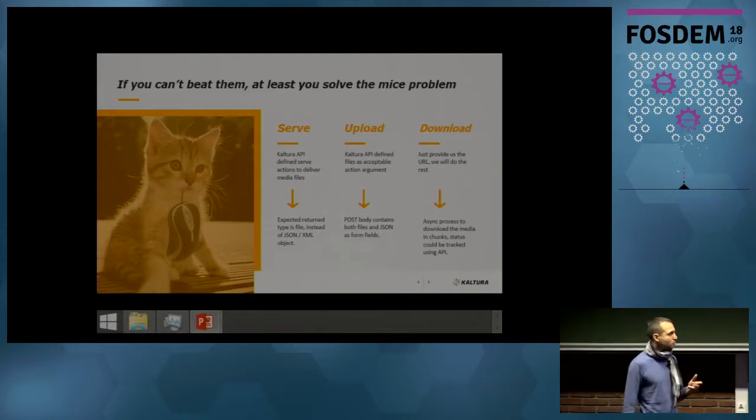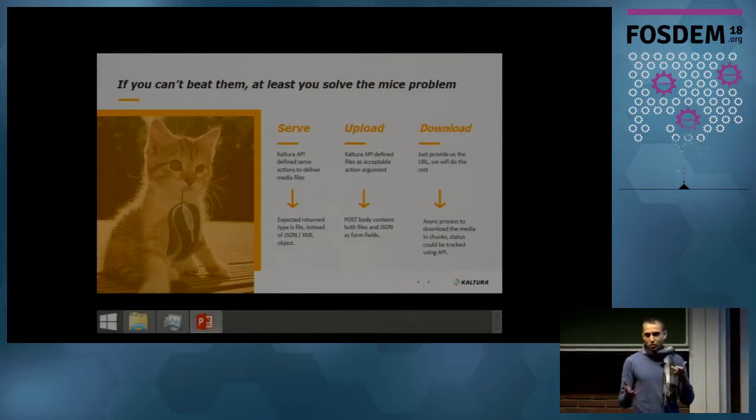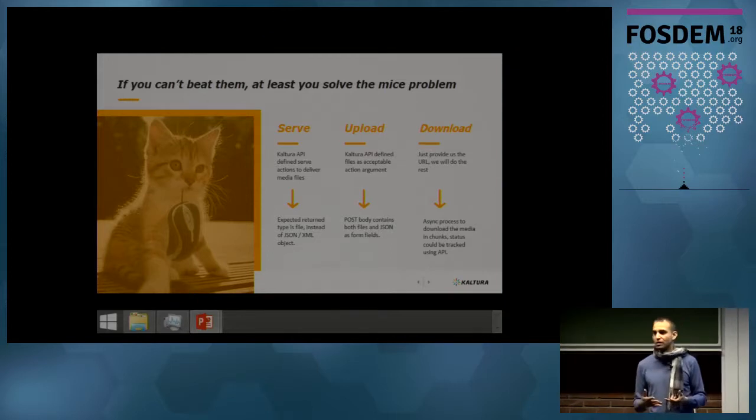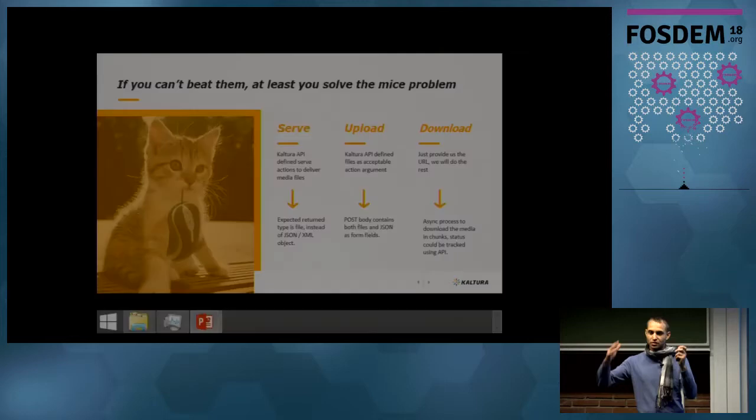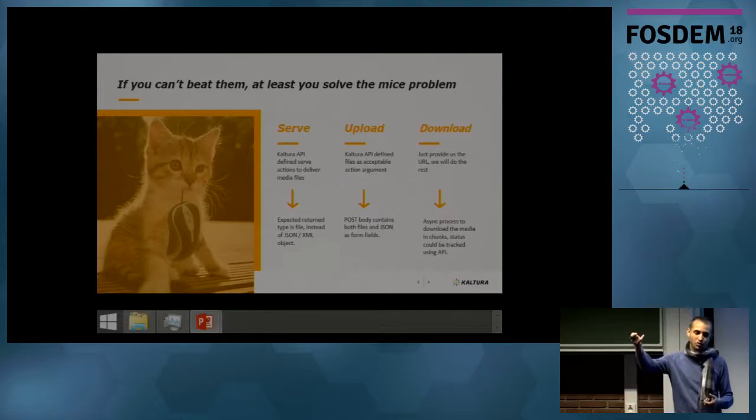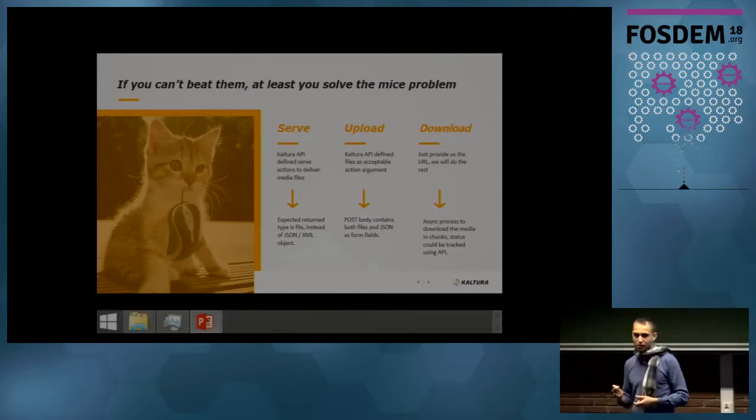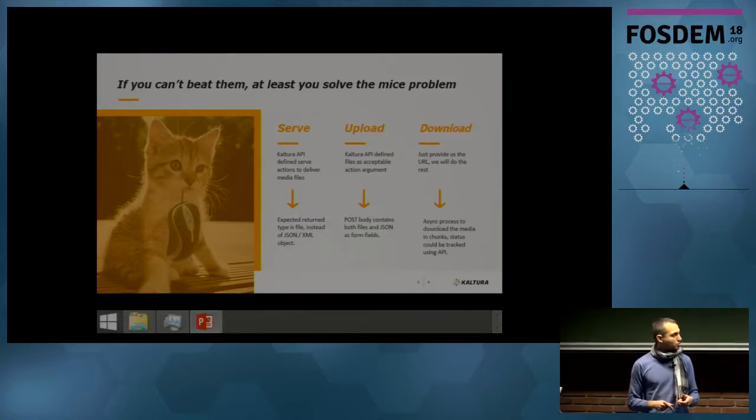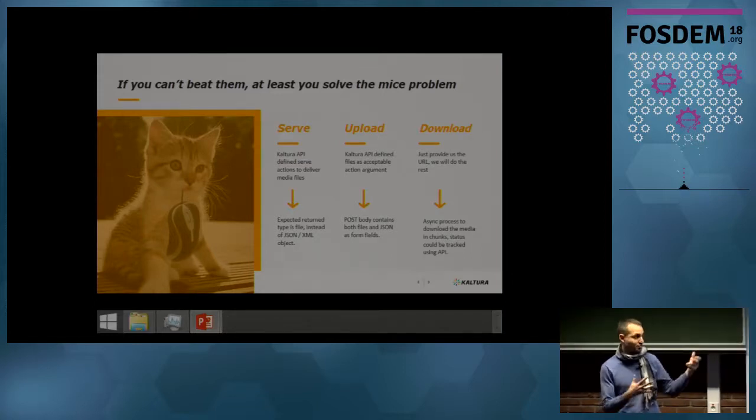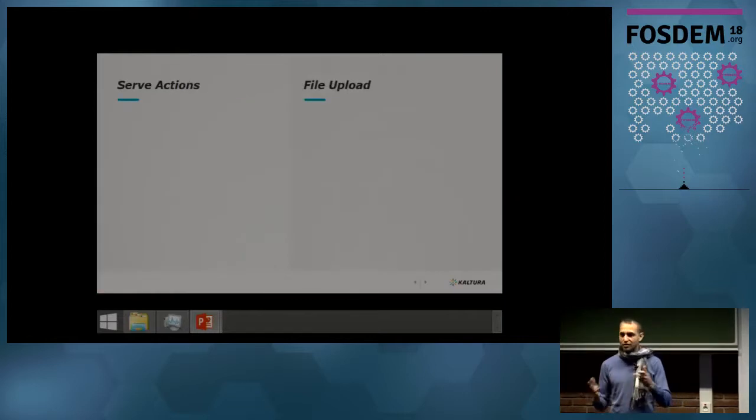As for uploads, we are using POST, of course. You can POST more than one file. Unlike GET, that enables you only path or a query string, POST enables you to send complex data. Another option that we have in order to upload content to Kaltura, you just inform Kaltura the location of the file, and Kaltura will pull the file for you. Because we are talking about REST API, we have to manage the status of the upload, of the download in this case. The status, if it's failed, succeeds, in progress, and so on.